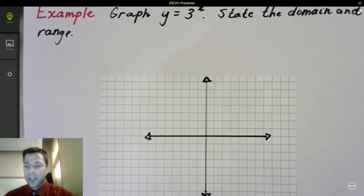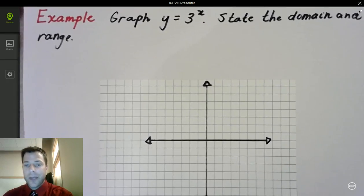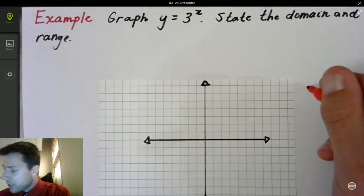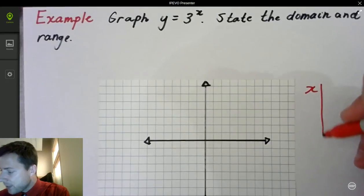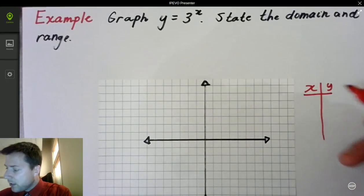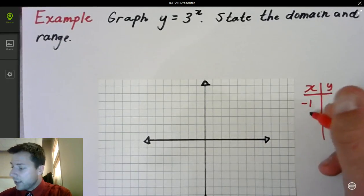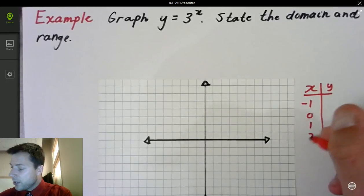Now, y equals 3 to the x. There's a lot of ways you can do this. I could make a table, right? If maybe I'm confused, I could say, all right, let's make a table this time and say, what happens when I use negative 1, 0, 1, 2?